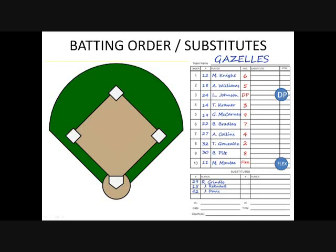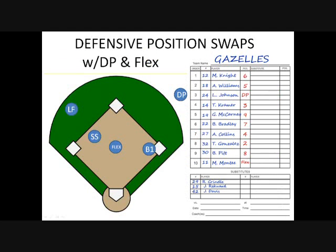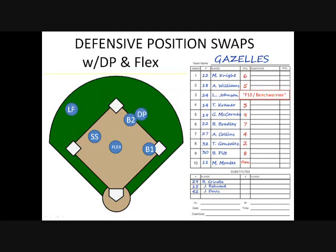Either the DP or the flex can be substituted for in the usual ways by other players, but the substitute takes on the position of the DP or flex, depending on who she's substituting for. As with any lineup, defensive position swaps are not substitutions. The DP starts at the defensive position of F10 benchwarmer. This means you can swap the DP with any player other than the flex on defense and no one has left the game — it is not a substitution. The player removed from defense continues to bat in her normal place in the batting order.